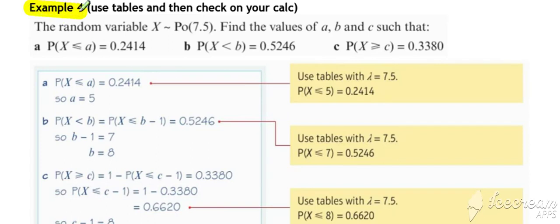In example four, we use the tables the other way around, so we've got our probability, and we want to work out what value of x that corresponds to. We need to look up the probability in the tables under the lambda heading of 7.5 and work backwards to work out what a is equal to.